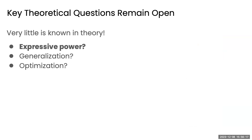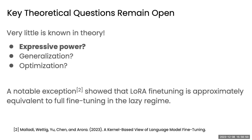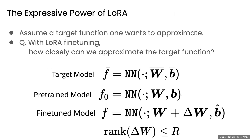In theory, we care about three things in machine learning: approximation error (how expressive the function class is), generalization, and optimization (can you actually find the model parameters?). Nothing is known about LoRA in the literature yet on any of these. We focus on expressive power. There's one exception studying LoRA fine-tuning in the lazy training regime — extremely small learning rates where the loss is linearized — but we go beyond that.